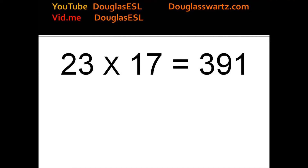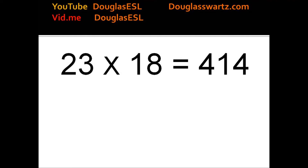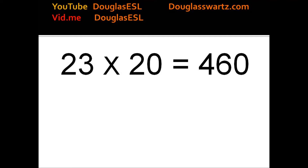23 times 17 equals 391. 23 times 18 equals 414. 23 times 19 equals 437. 23 times 20 equals 460.